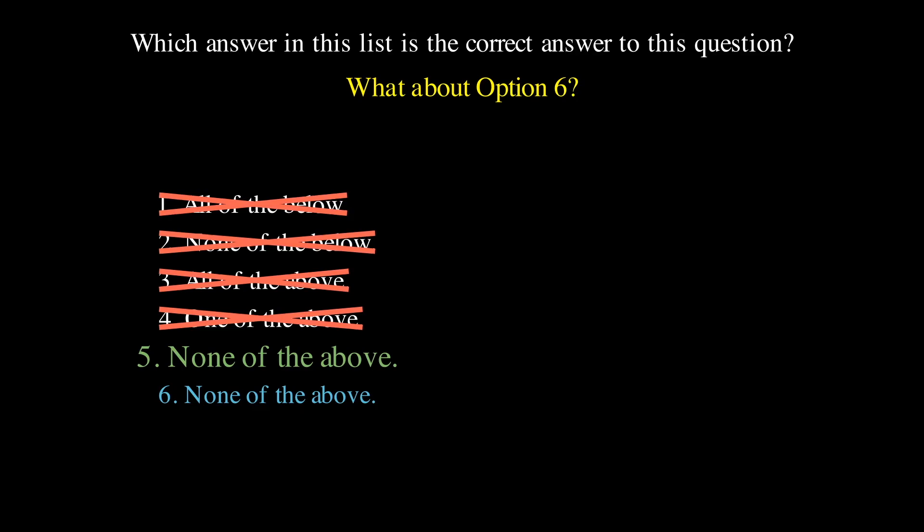What about option six? It also says none of the above, but if option six were correct, it means all of the above and five would be incorrect. However, we just found option five to be correct.